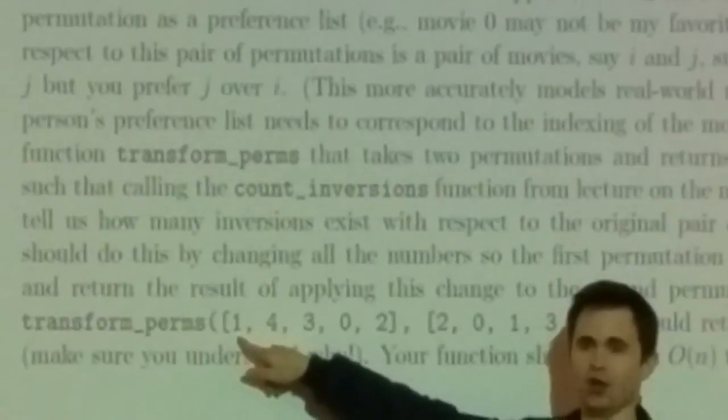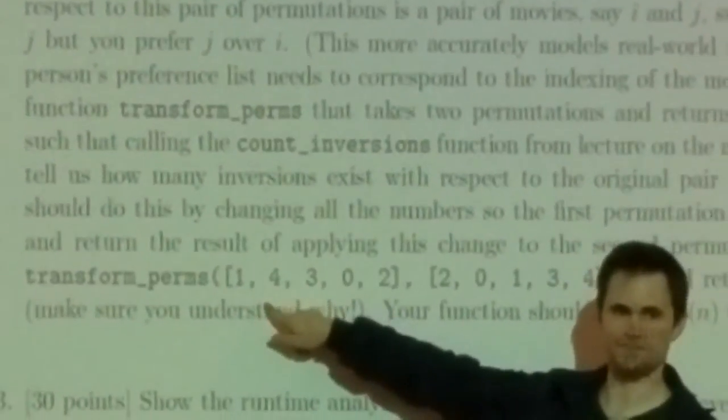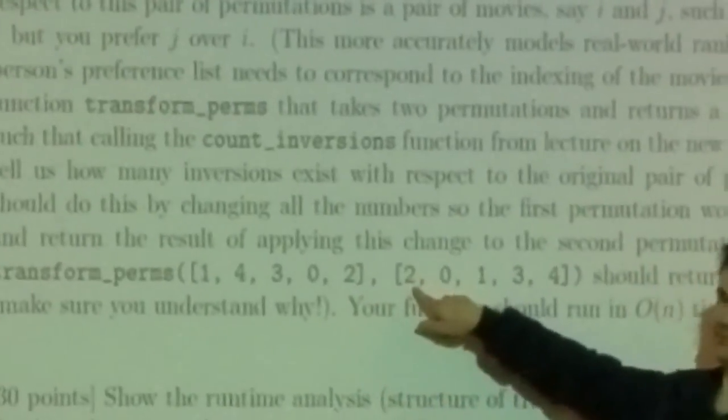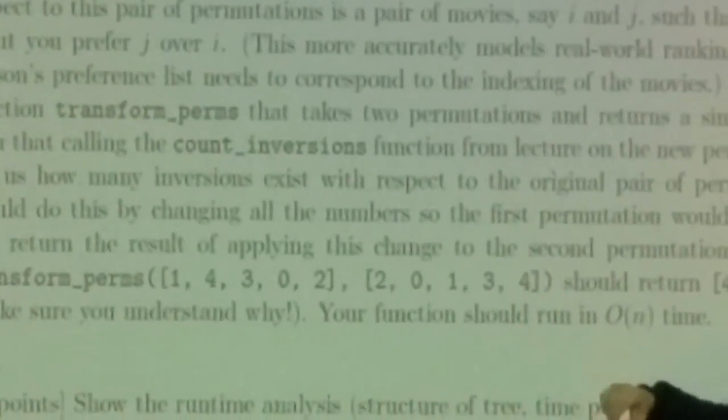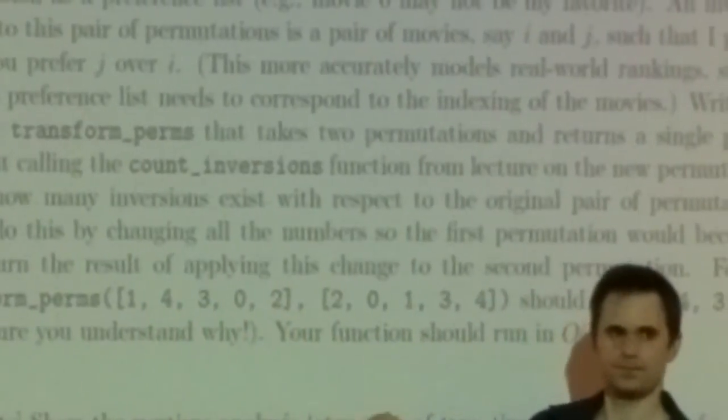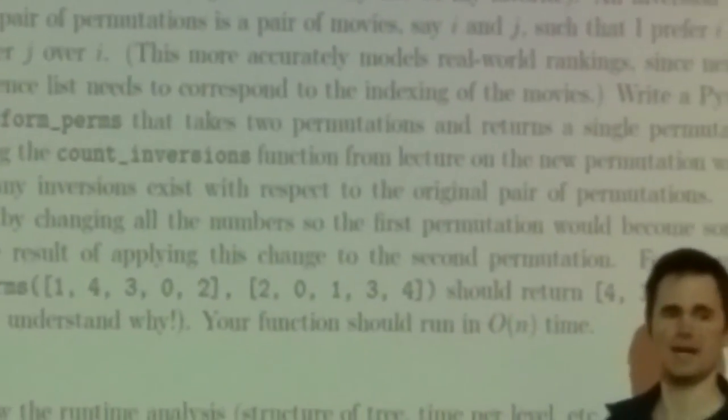Now another problem: my ranking becomes in order 0 through n minus 1. What happens to your ranking if we renumber the movies so that my ranking is just 0 through n minus 1? For example, if I said movie 1 was the best, movie 4 was the second best, down to movie 2 as my least favorite — and you had a different ordering — we renumber the movies so my list becomes 0, 1, 2, 3, 4. What happens to your list?